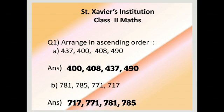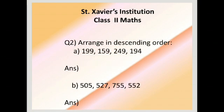Our next question: arrange in descending order - 199, 159, 249, 194. Descending order, so which one will you choose first? The largest one. So it is 249, then comes 199, followed by 194, and lastly 159.